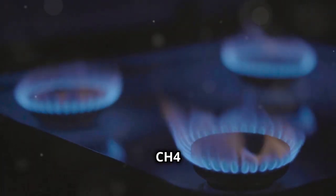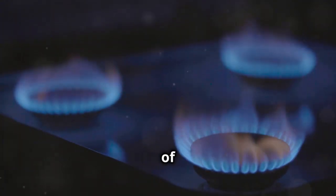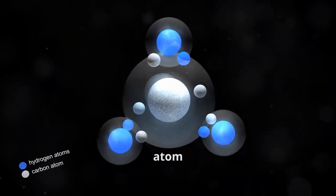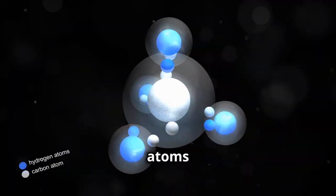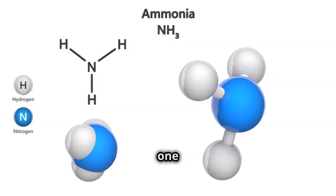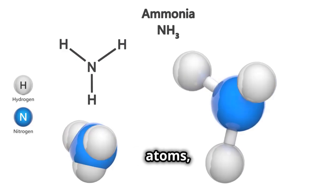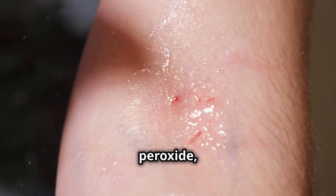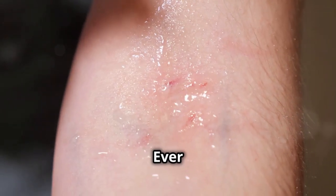Methane, CH4: this is the main component of natural gas, which we use for heating and cooking. One carbon atom teams up with four hydrogen atoms to form this important fuel. Ammonia, NH3: this compound with one nitrogen atom and three hydrogen atoms is crucial for making fertilizers that help crops grow.